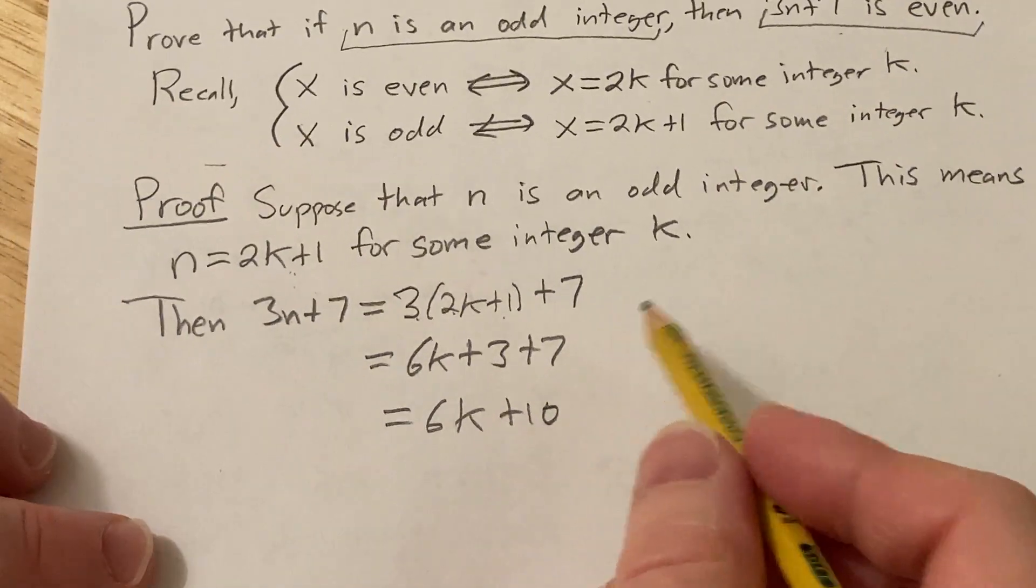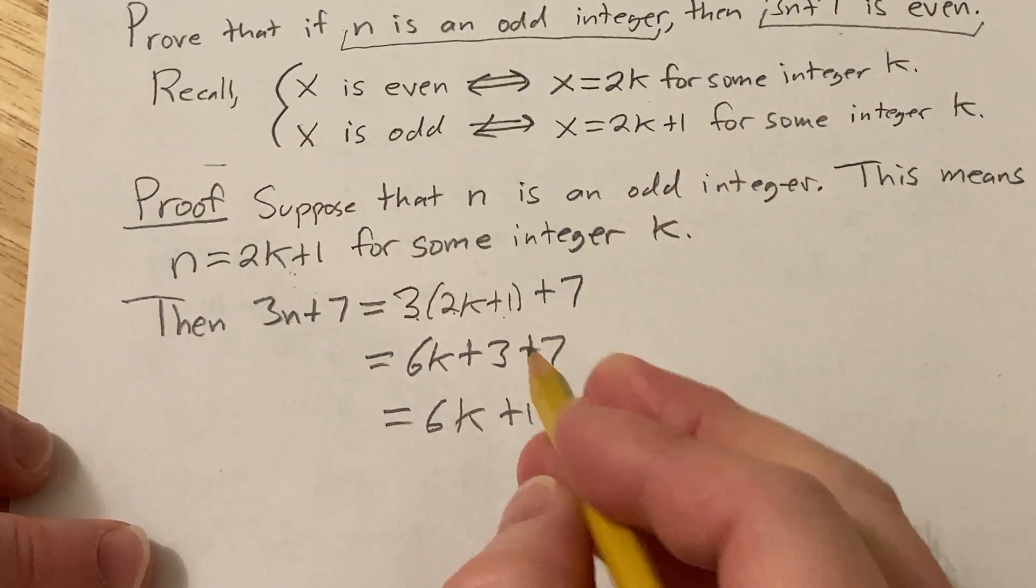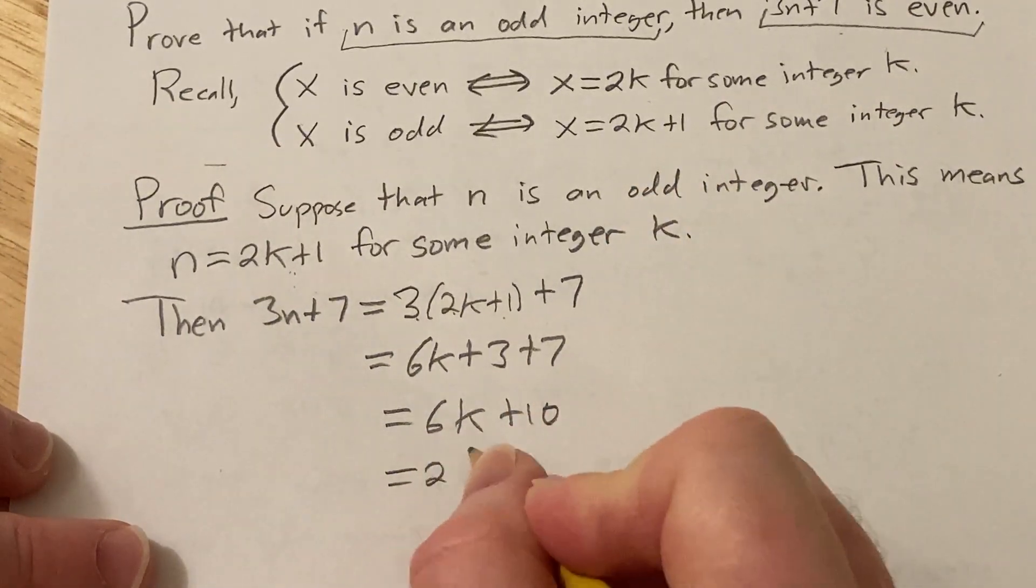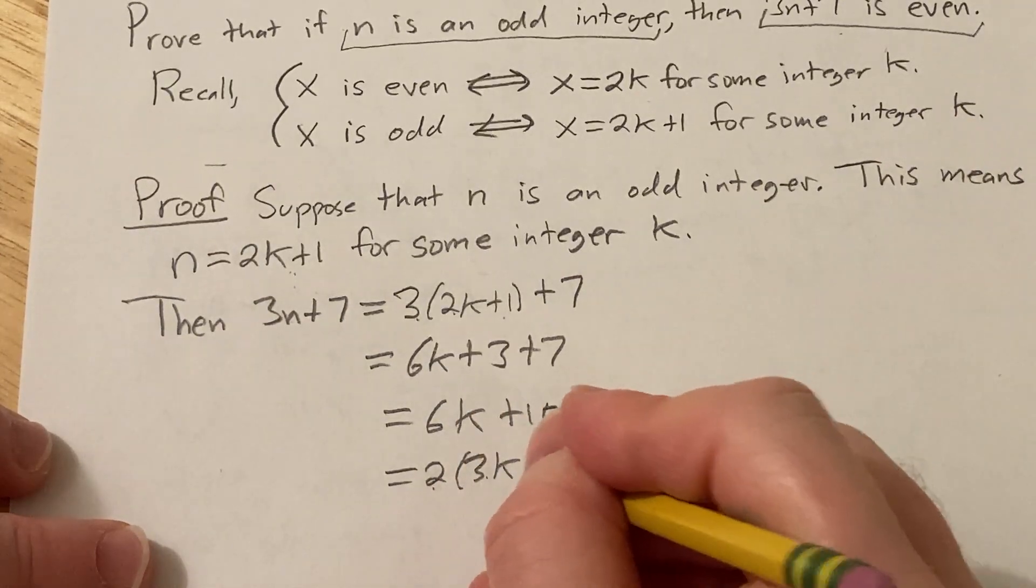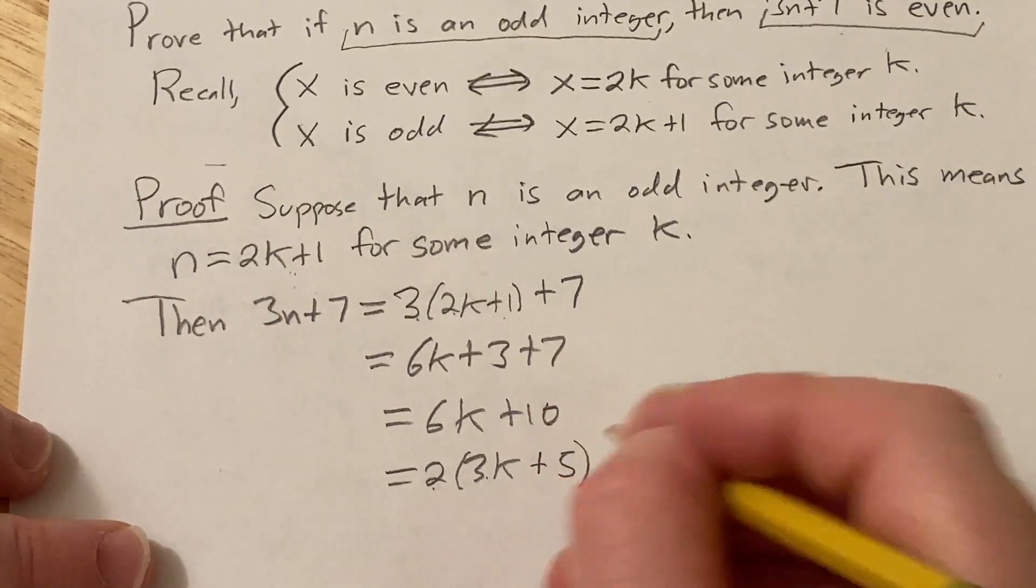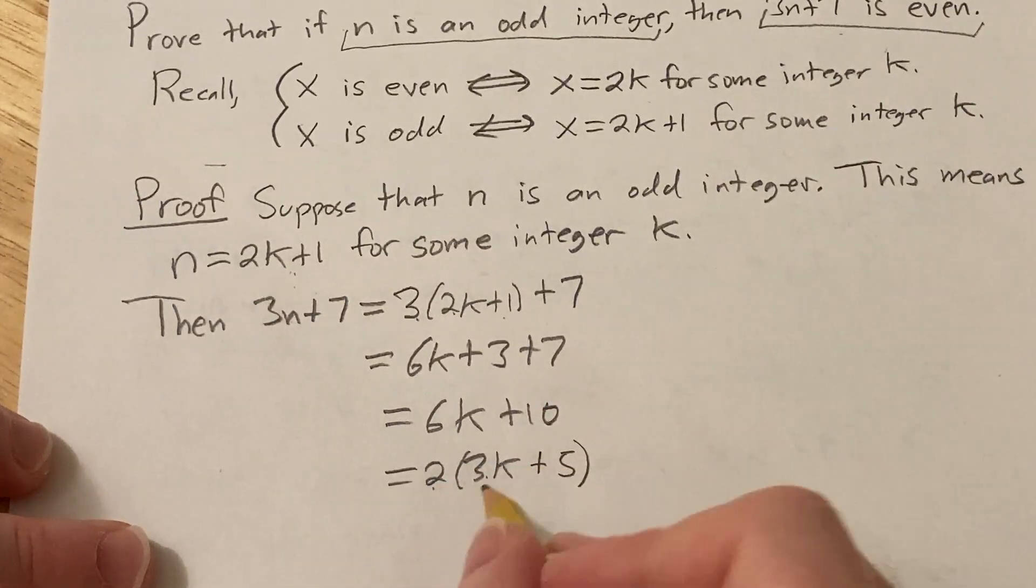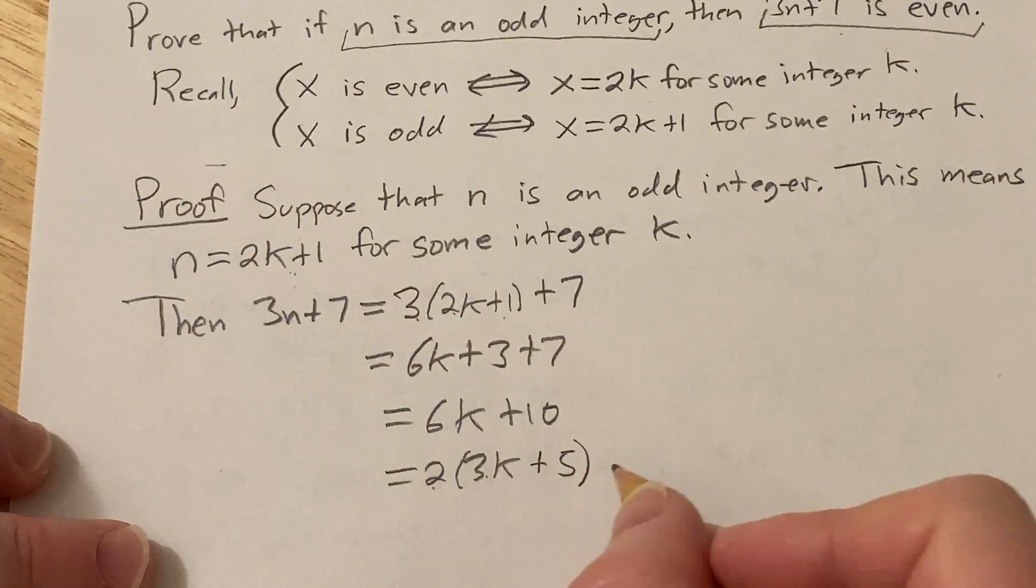Hmm, we're trying to show it's 2 times an integer, so look at this. We can pull out a 2, so we have 3k, because 2 times 3k is 6k, and we can pull out a 2 from the 10, so we get 5. So this is going to serve the purpose of our k, this 3k plus 5.